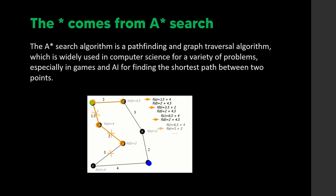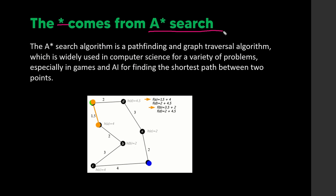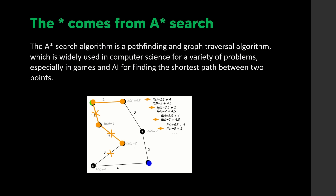There was a research paper written around 2019, and the A-Star search algorithm is a pathfinding and graph traversal algorithm widely used in computer science — especially in games and AI — for finding the shortest path between two points.